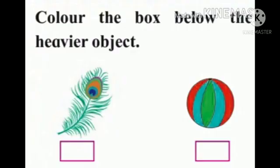Understood children? Now, next example. Color the box below the heavier object. Now children, what can you see in the picture? One is a peacock feather and the other is a ball.